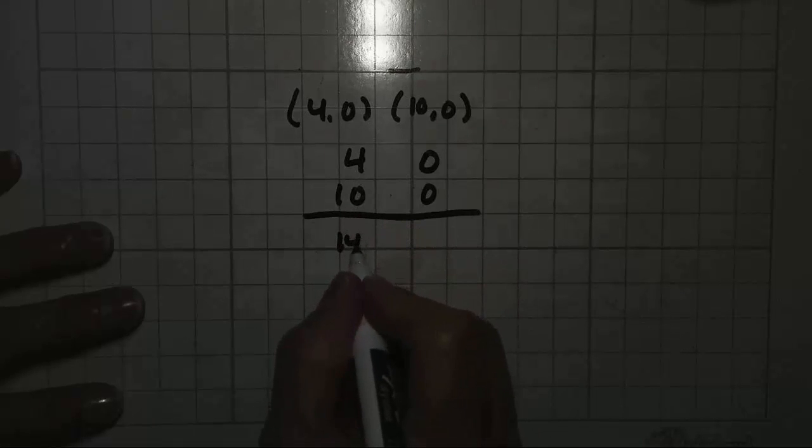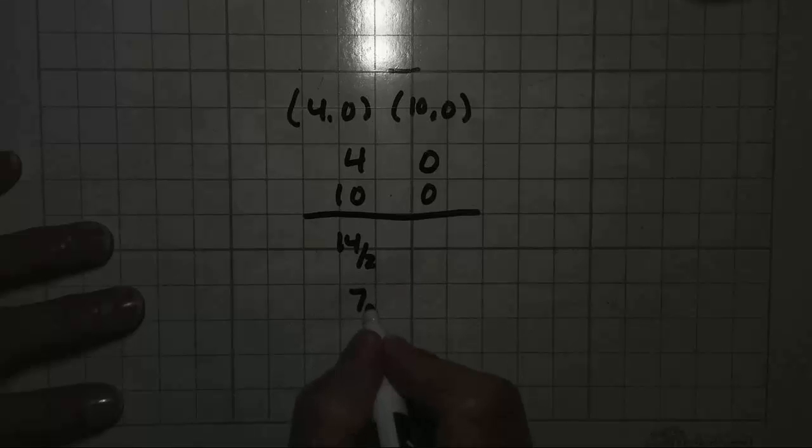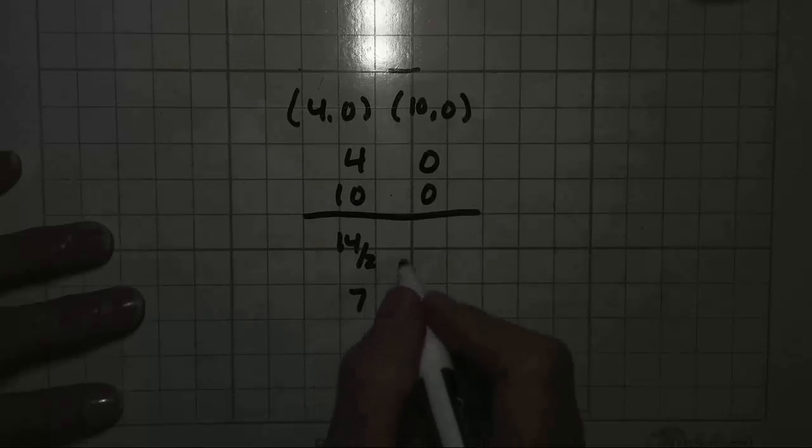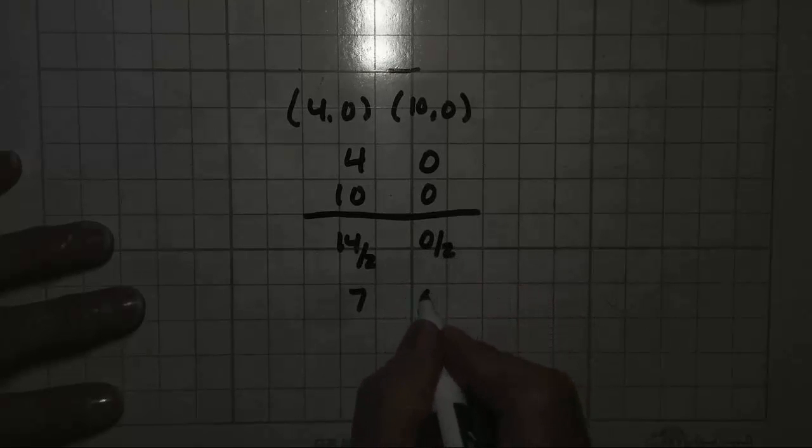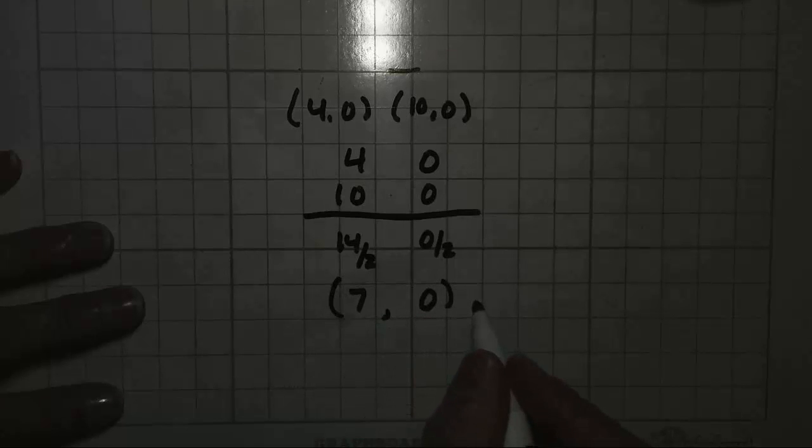4 plus 10 is 14. 14 divided by 2 is 7. That means your x coordinate is at 7. Now this one's easy because 0 plus 0 is 0 and 0 divided by 2 is 0. So the coordinates of your midpoint are 7 and 0.